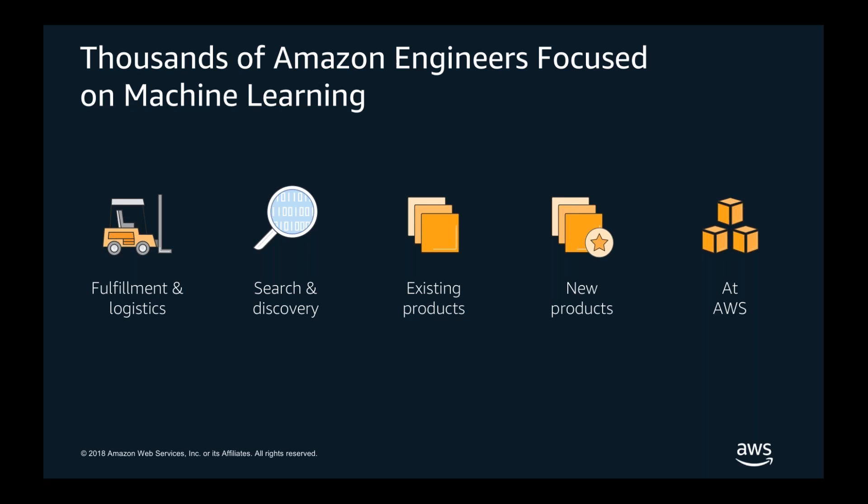Search and discovery is a very common use case where you need to find items among millions — very common on Amazon.com. We also look at taking existing products and adding new AI and ML features to extend them. For example, Amazon Kindle has an X-Ray feature, also available inside Amazon Video, which allows you to drill in and understand content better. And this can lead to completely new products — like the voice user interface behind Alexa's popularity, and new services such as Amazon Go, which we'll talk about briefly.